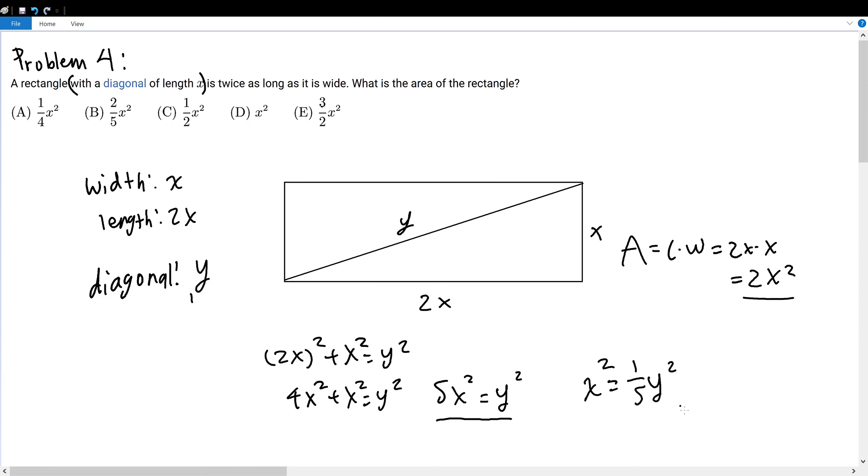So then, what is the area? Well, the area is 2x². So we must multiply 2 on both sides to get 2/5 y².